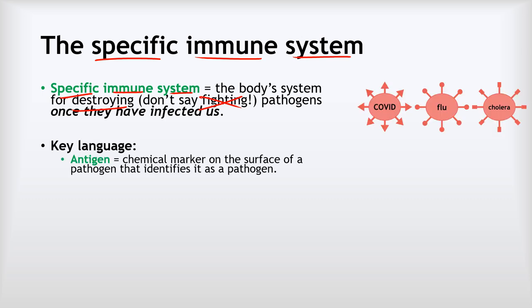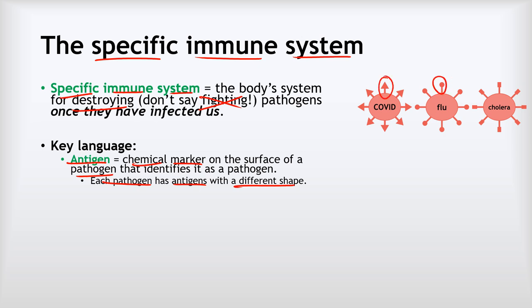We're going to learn some key language first. An antigen is a chemical marker on the surface of a pathogen that identifies it as a pathogen. Importantly, each pathogen has antigens with a different shape. For example, we can picture COVID antigens as triangle-shaped, flu as circle-shaped, and cholera as rectangle-shaped. That represents the idea that each different pathogen has its own antigens — its own chemical markers that are a specific shape for that particular pathogen.